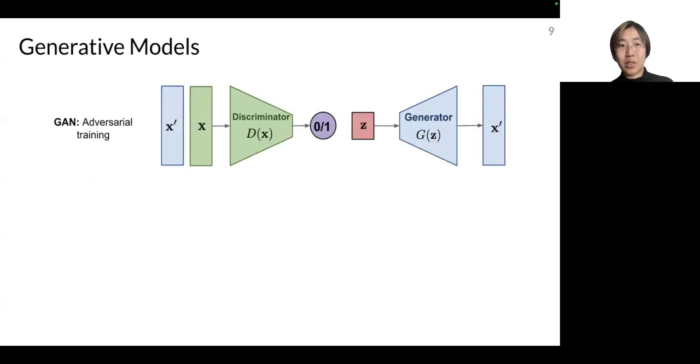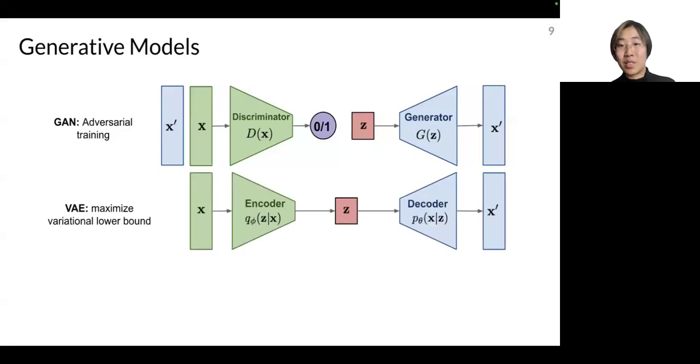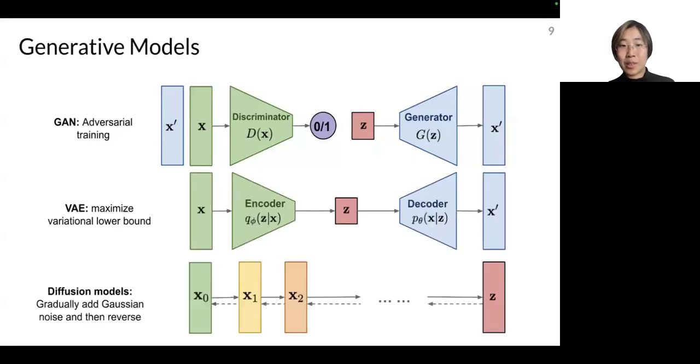What are the current choices of generative models? Here we show three examples. First, many of us are familiar with the generative adversarial training GAN models, as well as the VAE models. And diffusion models is a rising trend in the recent years. It has shown very nice effect and it worked by gradually adding Gaussian noise and then reverse it to perform the reconstruction process.